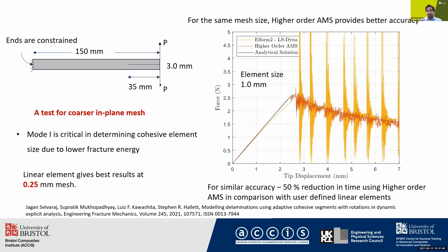Higher-order AMS, involving rotation-enabled cohesive element formulation and the adaptive method, is validated against an analytical solution and the results are compared against linear elements. In this analysis, a mesh size of one millimeter is used, whereas linear elements require a 0.25 millimeter mesh, which increases computational cost. As you can see, higher-order AMS provides smooth initiation of cohesive elements on the fly and stable damage propagation when compared to linear elements.